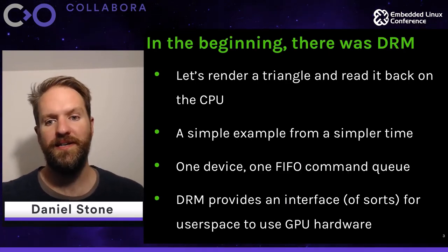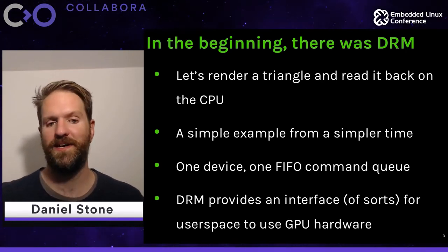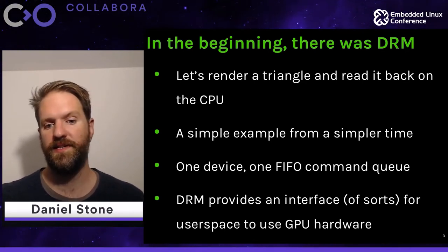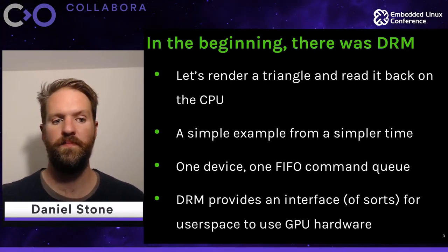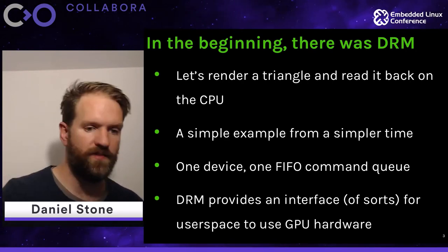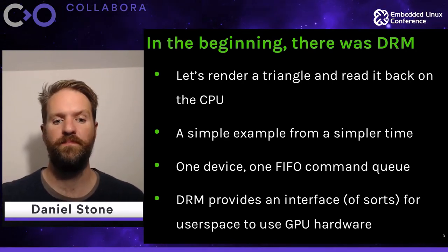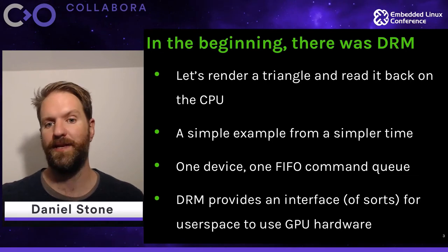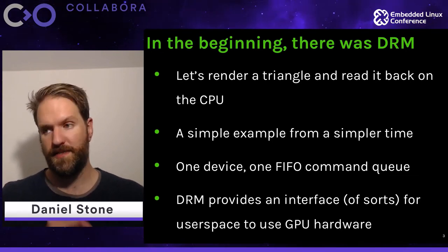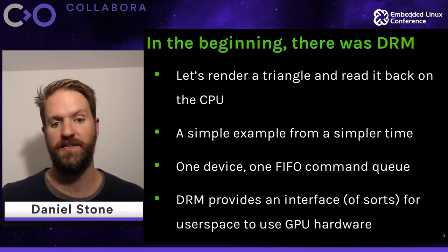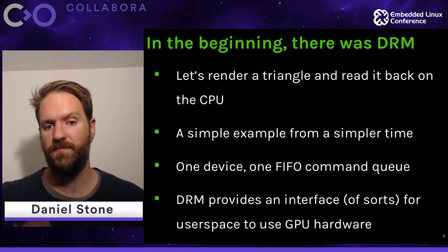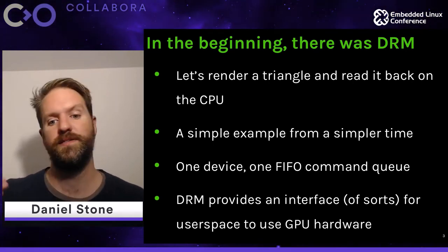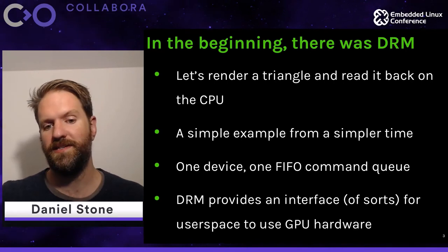Our first starting point is DRM — not digital rights management, but the Direct Rendering Manager. This is our interface between user space and the GPU hardware. Starting really simple and completely dumb: we're assuming a single device with one command queue that's completely FIFO and completely coherent. This is a complete lie as far as hardware goes today, but it's easier to build up the model this way, and then we can add more complex uses and developments from the past 15 to 20 years.